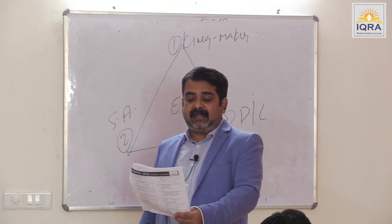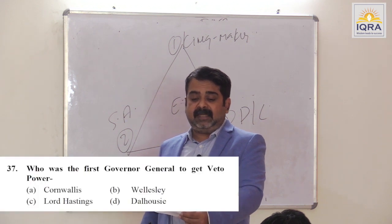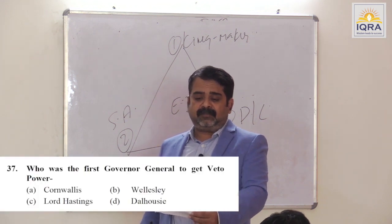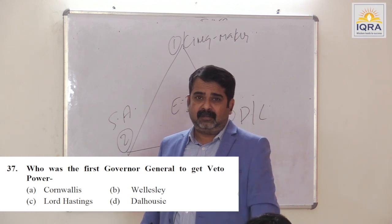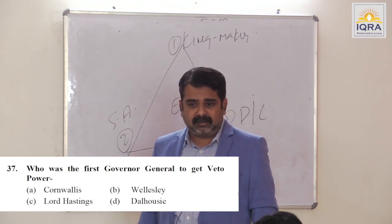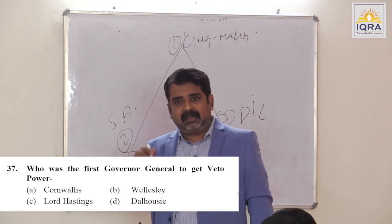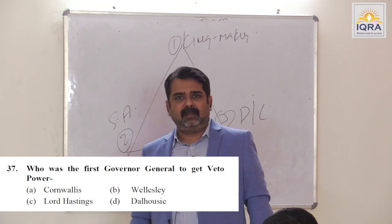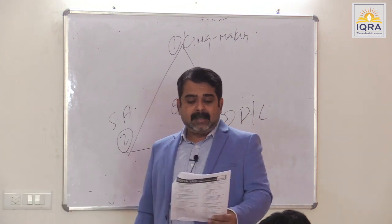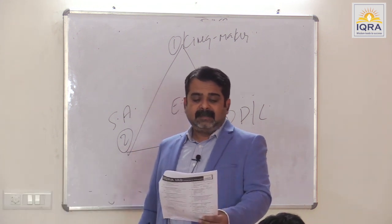Who was the first Governor General to get veto power? Cornwallis — he came to India on this condition. Answer is A.